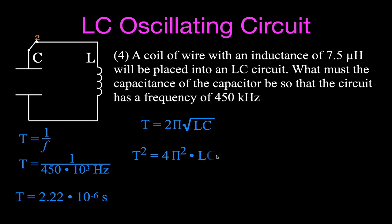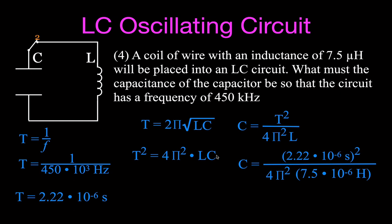Using the same equation, I square both sides to get T² = 4π²LC, then solve for C: C = T² / (4π²L). Plugging in: T = 2.22×10⁻⁶ seconds squared, divided by 4π², times L = 7.5×10⁻⁶ henries. You get C = 1.67×10⁻⁸ farads, or 16.7 nanofarads. Those are four good basic problems for figuring out how LC oscillating circuits work.